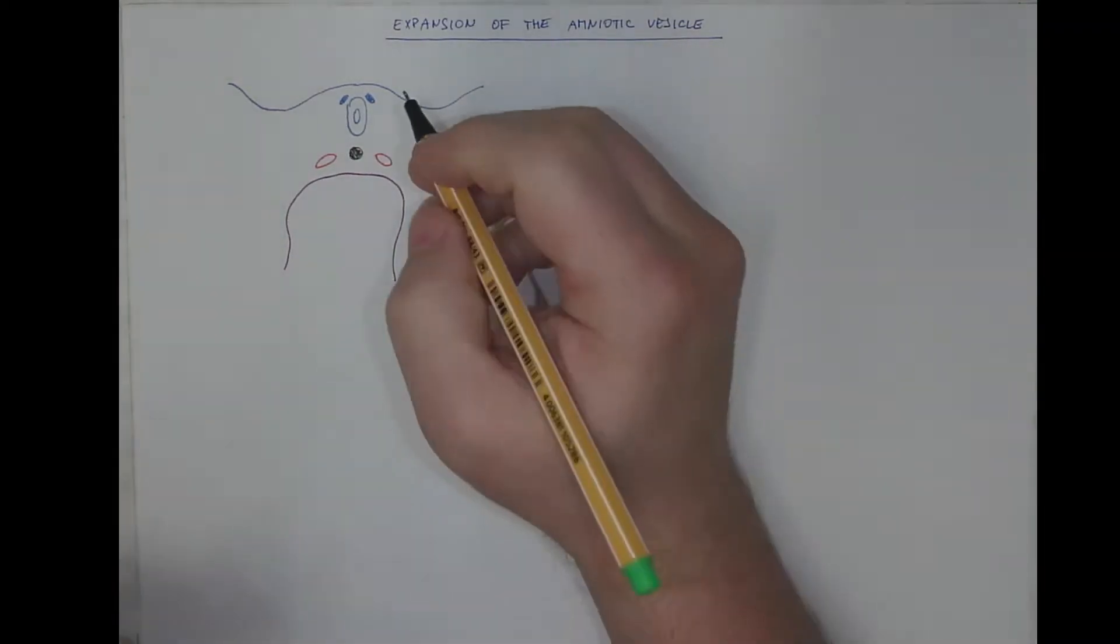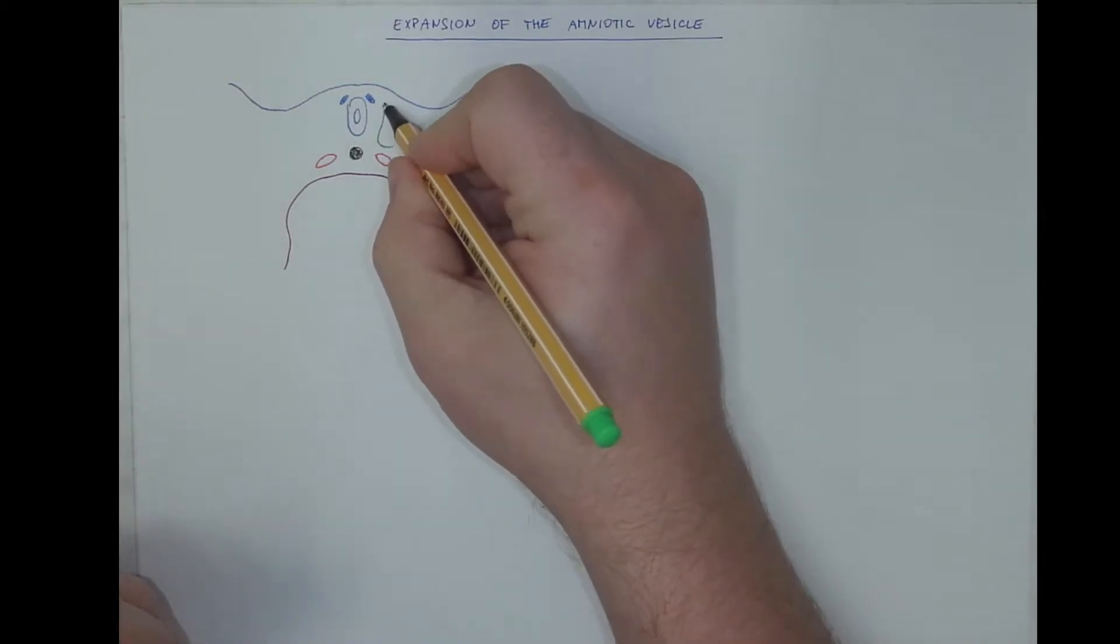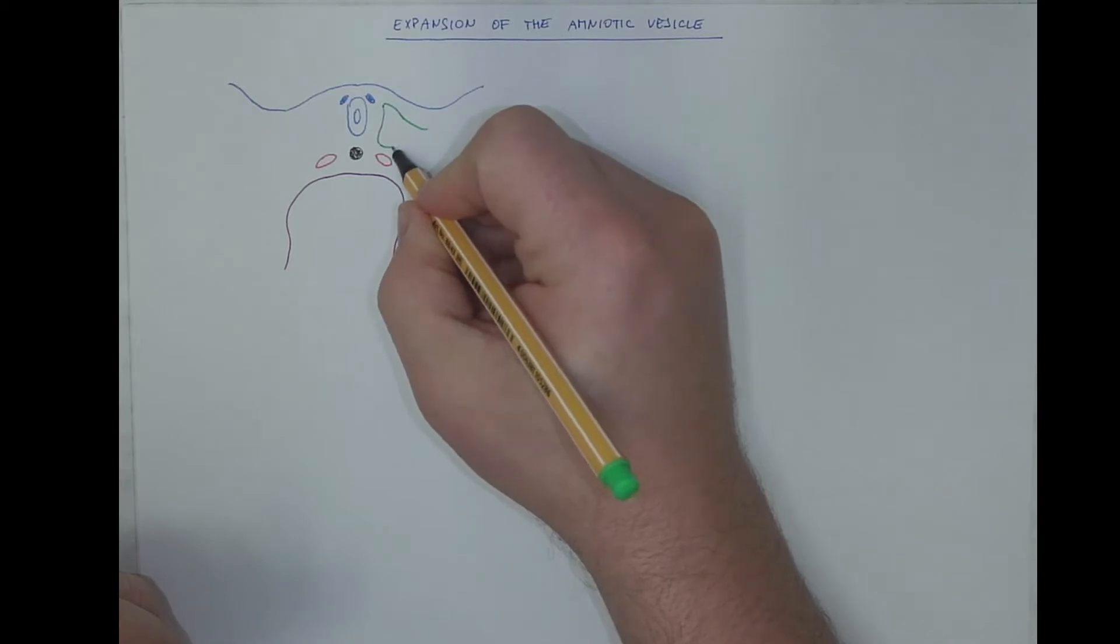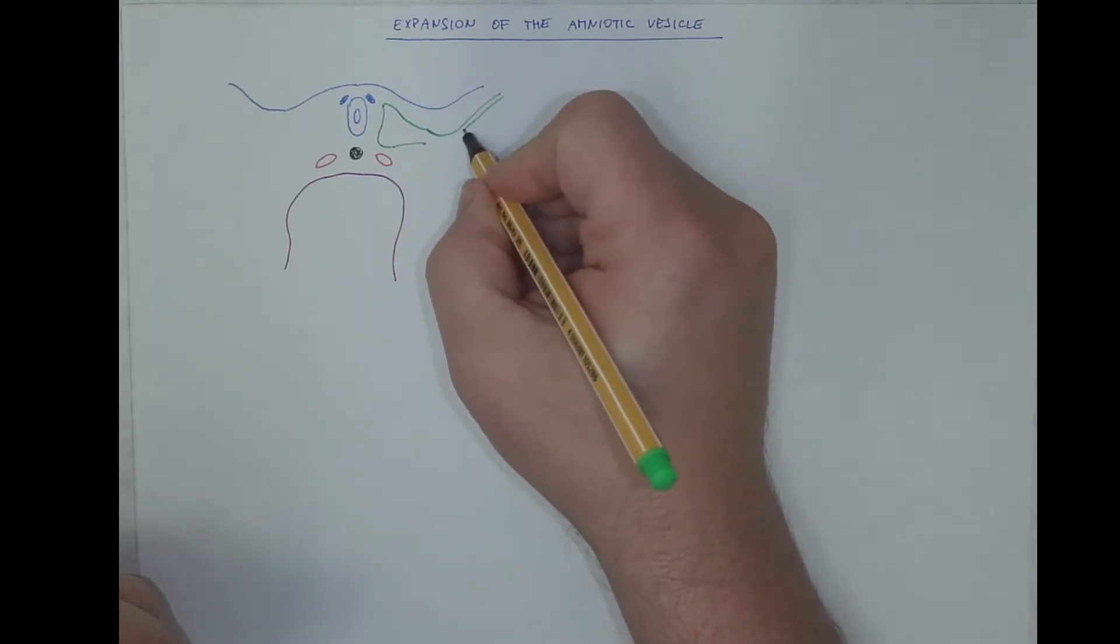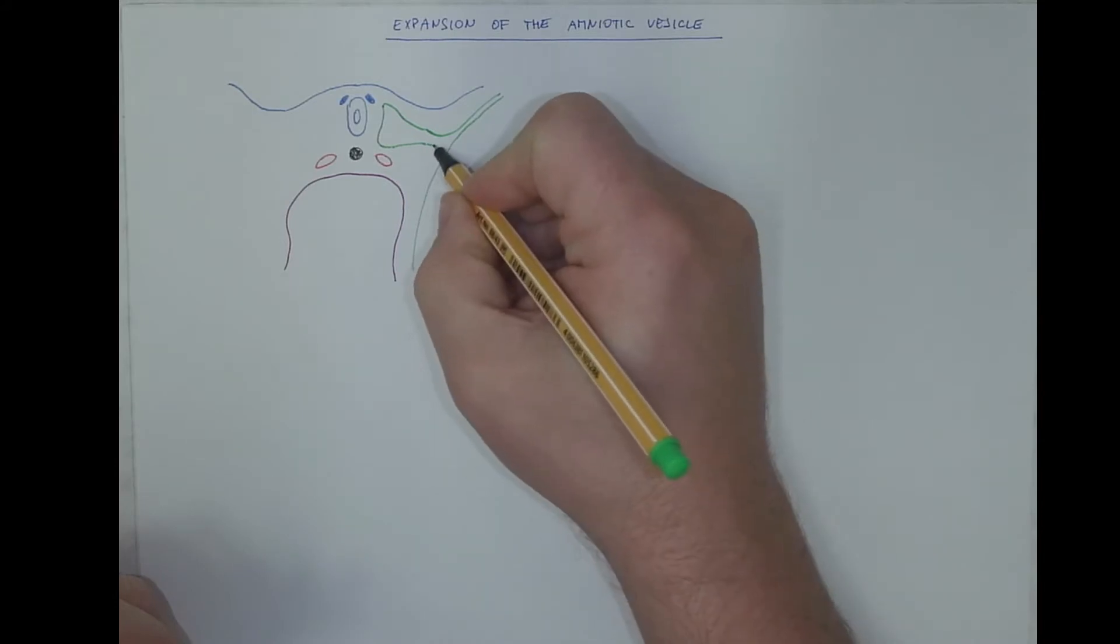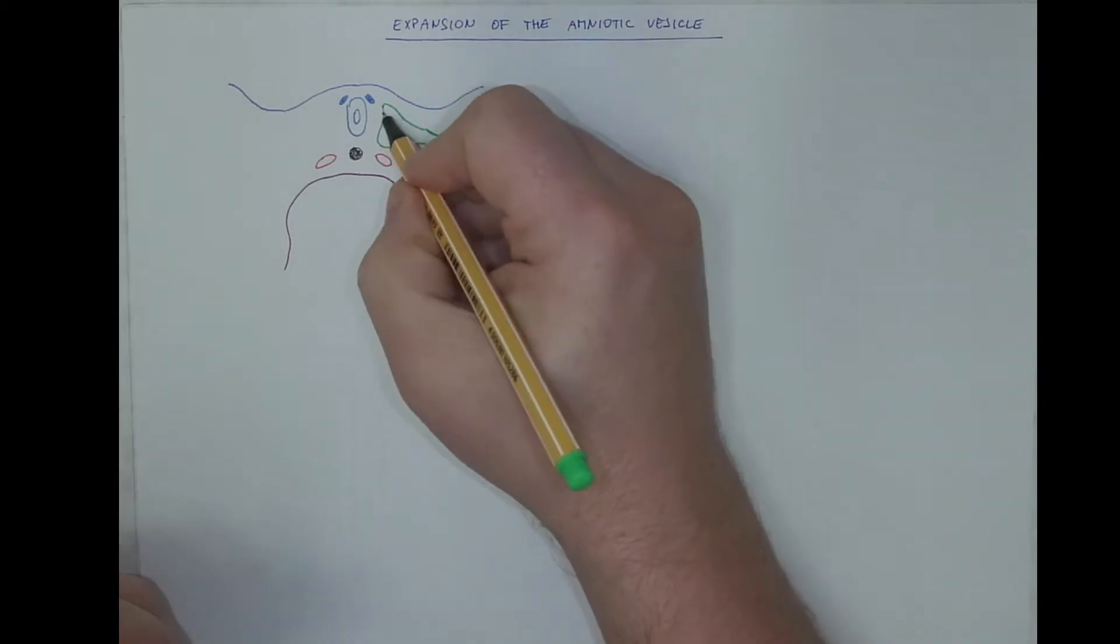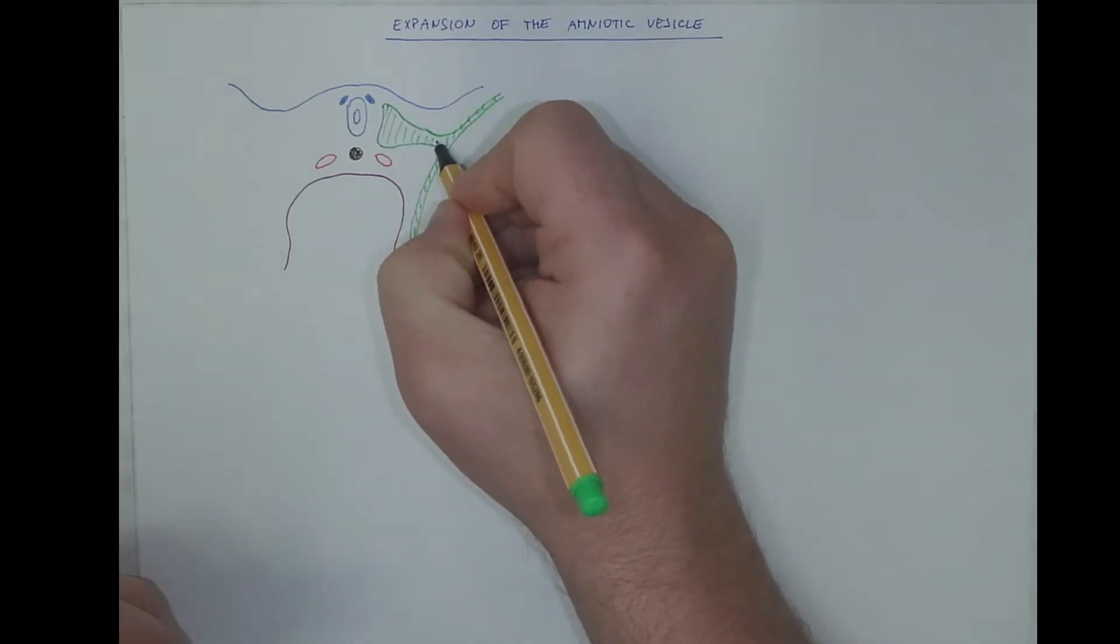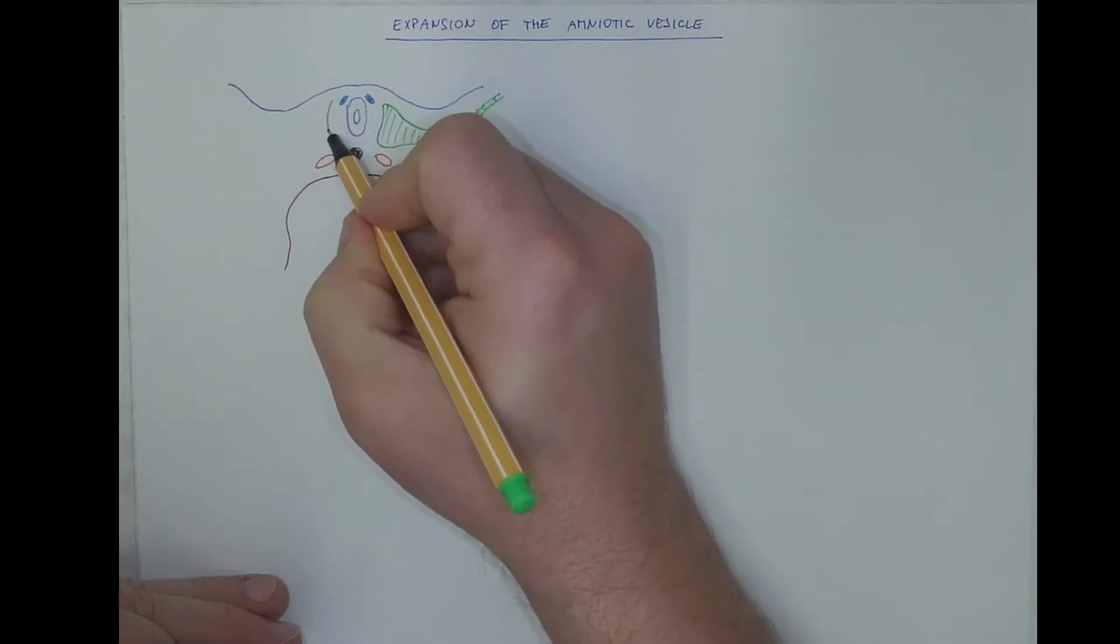Not forgetting the mesoderm, I mean the paraxial mesoderm, the intermediary mesoderm, and the lateral plate mesoderm, consisting of two layers, the somatopleuric and splanchnopleuric mesoderm.